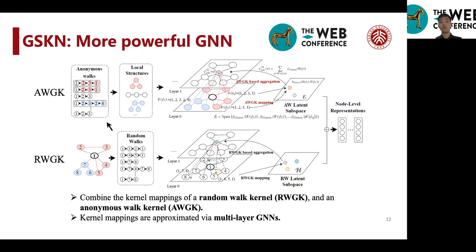The first is a random walk graph kernel, and the second is an anonymous walk graph kernel. And these kernel mappings are approximated via multilayered graph neural networks and are combined with each other in the kernel space.